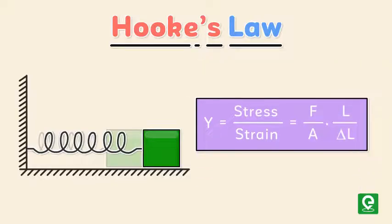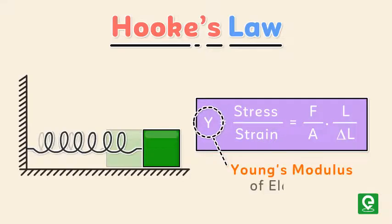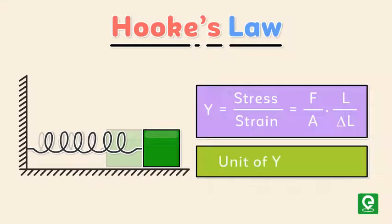Here Y is the constant of proportionality and it is called the Young's modulus of elasticity of the rod. The unit of Young's modulus is newton per meter square.